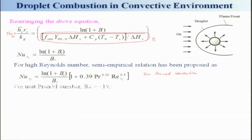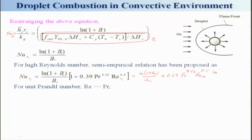Now, if I say that this Reynolds number is much larger than the Prandtl number, then you will see that this expression can be simplified further. I can write it as: [ln(1 + B_c) / B_c] + 0.39 * Pr^0.33 * Re_rs^0.5 * [ln(1 + B_c) / B_c]. If you look at the first term here, it will be quite small compared to the second term. I will take an example.